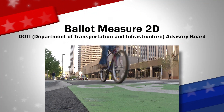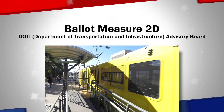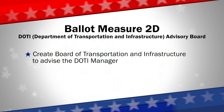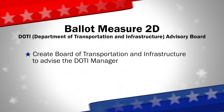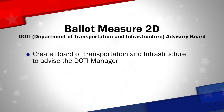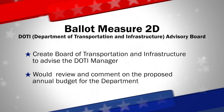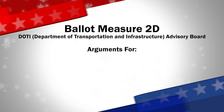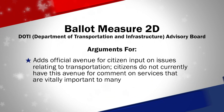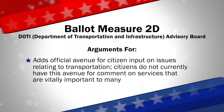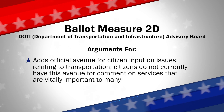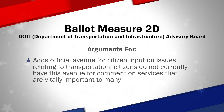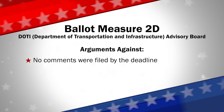Ballot measure 2D asks if the city charter should be amended to create the Board of Transportation and Infrastructure to advise the manager with respect to the policy and operation of the department. The board would also review and comment on the proposed annual budget for the department. Those in favor of 2D say this proposal adds an official avenue for citizen input on issues relating to transportation. Citizens do not currently have this avenue for comment on services that are vitally important to many. No opposing comments were filed by the deadline.